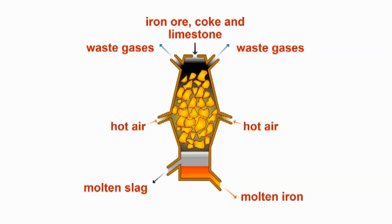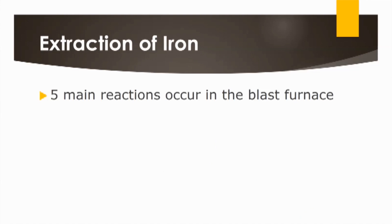In terms of the products being produced, there is molten slag as well as molten iron. However, as molten iron is denser than molten slag, it will be found at the lower half — it will sink to the bottom. There are five main reactions that occur in the blast furnace.